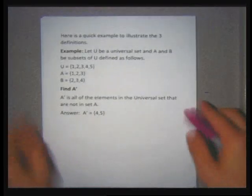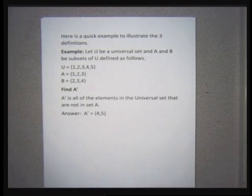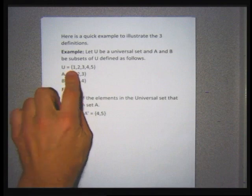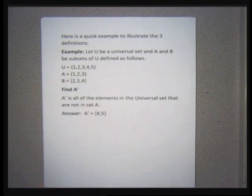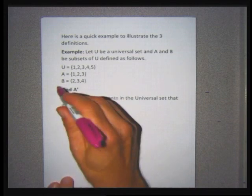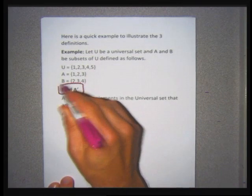For this quick example, I made up a universal set with numbers one through five, and I randomly created set A having the numbers 1, 2, 3, and set B having 2, 3, 4. The first thing I want to find is A complement.